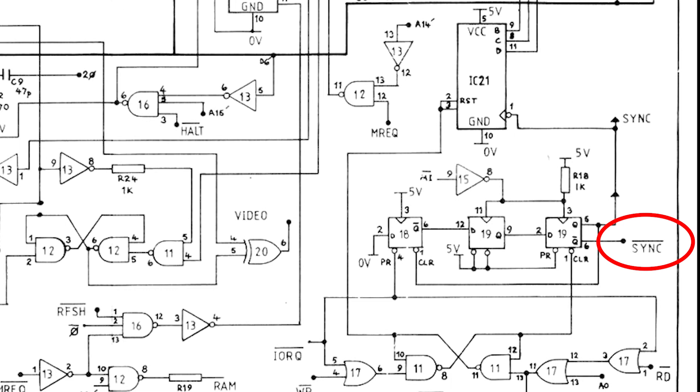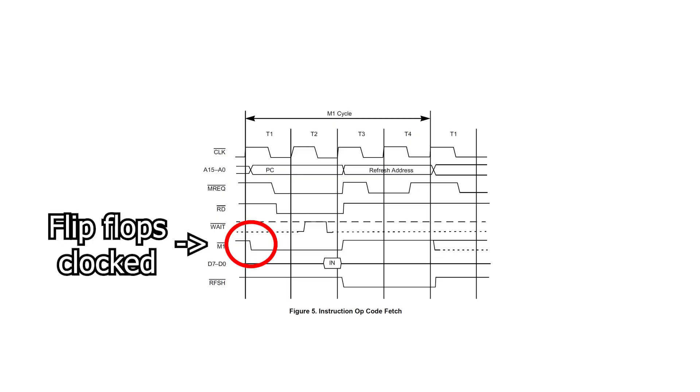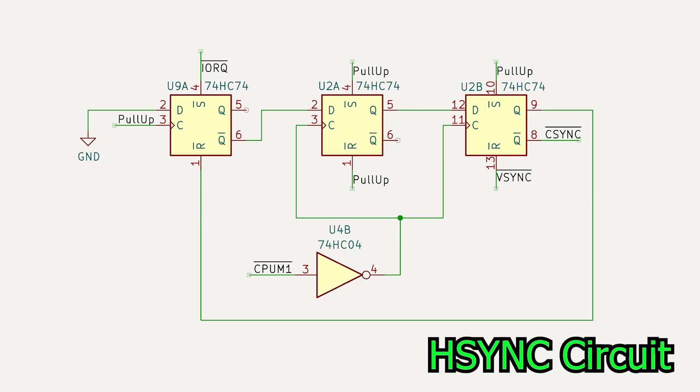So how exactly does it work? We have this inverter, which means the flip-flop is actually clocked on the negative edge of M1 bar. Normally, IO-REC's high, and in its normal state, the Q-bar output from the leftmost flip-flop will be high as well.